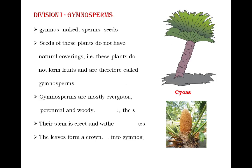The first division is Gymnosperms. The word 'gymnosperms' is divided into 'gymnos' meaning naked and 'sperms' meaning seeds. Those plants whose seeds are visible with naked eyes are called Gymnosperms. The seeds of these plants do not have natural coverings, and these plants do not form fruits. Because of these two reasons — seeds without natural covering and without fruits — these plants are called Gymnosperms.